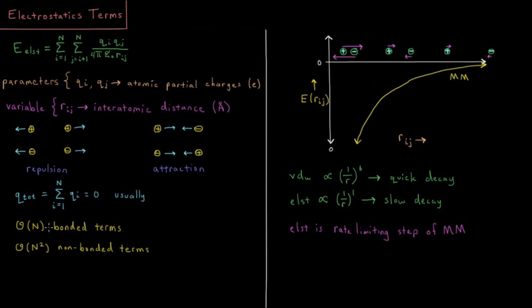As I mentioned in our previous video on van der Waals energies, typically we have a linear number of bonded terms. So the number of bonds, angles, torsions, out-of-planes scale linearly or less with the number of atoms in our system.